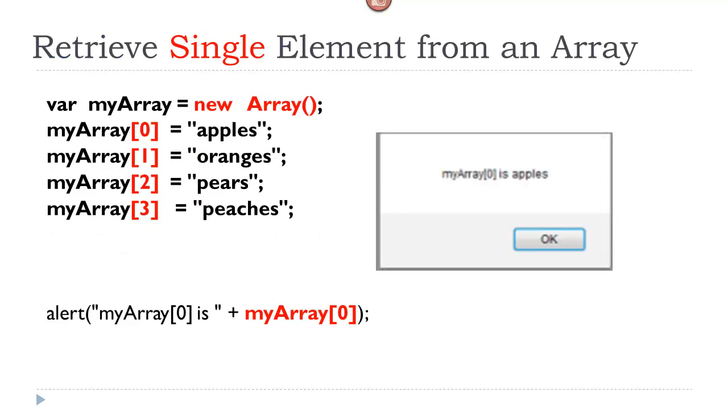Now how would we retrieve a single element from the array? So this is the same array that we just looked at. And if you look at the bottom of the screen here in the alert, and remember when I echo back an alert, a lot of times I like to combine it with a literal, so it gives me a better understanding of what it is I'm looking at, rather than just looking at a string or a word such as apples. So if I wanted to retrieve the value of my array index zero, that is exactly how I would do it, the actual variable name, myArray index zero. So you want to look at that as a variable. Although it's part of an array, it is still a variable in the sense that it will return a value.